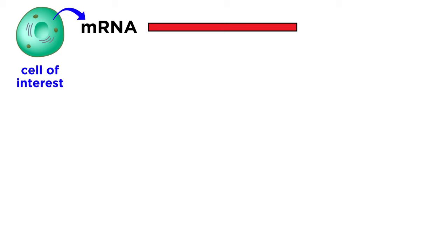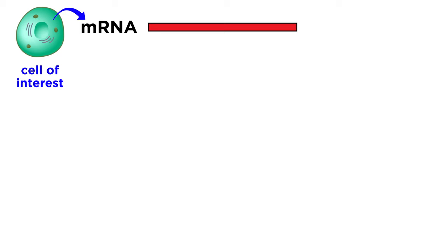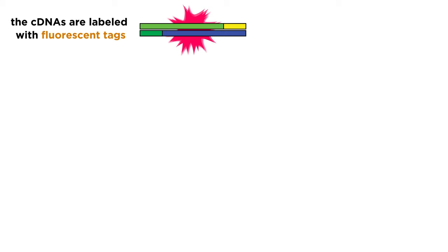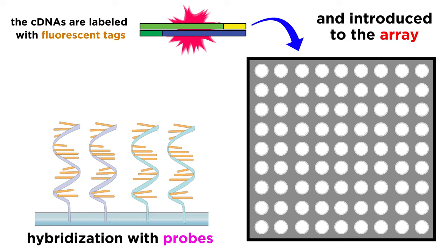Then by the process we already discussed, mRNAs that are made in a cell of interest are isolated, and reverse transcription is performed to generate cDNAs. These cDNAs are labeled with fluorescent tags and introduced to the array, allowing them to hybridize with any complementary DNA sequence they can find.